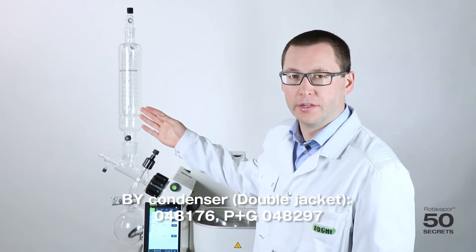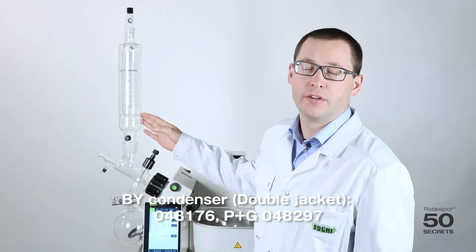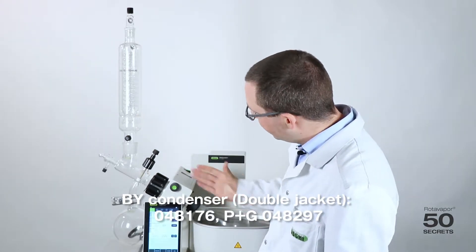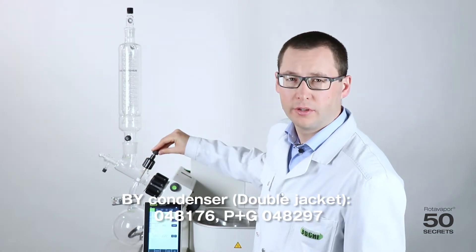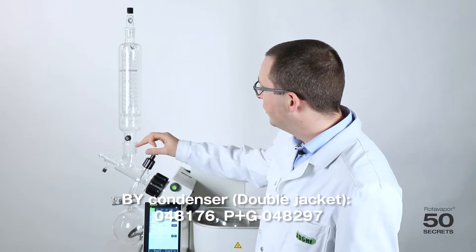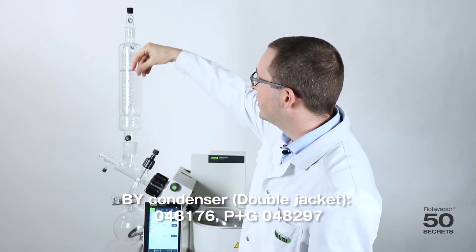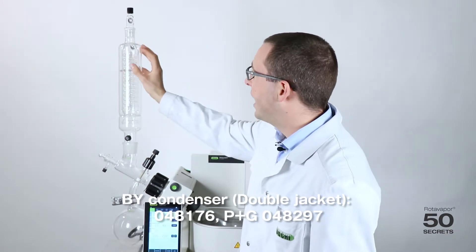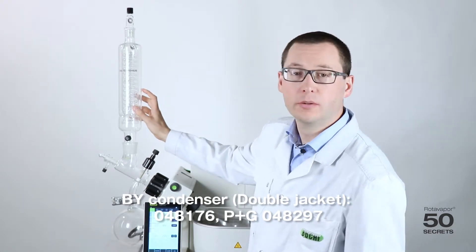This is the BY condenser, the double jacket condenser. It has a cooling surface of 1300 square centimeters. We have the vapor flowing through the distribution piece with the shutoff valve, so reflux possibilities. It will then flow over here and it will go through this area. Now this area is kind of special. We have the outer jacket which is cooled as well as the inner tubings which is cooled too.